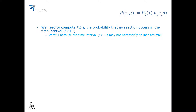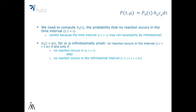Here we need to be careful because the time interval from t to t plus tau may not necessarily be infinitesimal. Let's think about the probability P0 of tau plus d-tau, where d-tau is infinitesimal. That is the probability that no reaction has occurred in the interval from t to t plus tau plus d-tau. This is the same as no reaction occurring in the interval from t to t plus tau, and no reaction occurring in the infinitesimal interval from t plus tau to t plus tau plus d-tau. So P0 of tau plus d-tau equals P0 of tau times 1 minus the sum of any reaction having occurred in this interval of length d-tau.